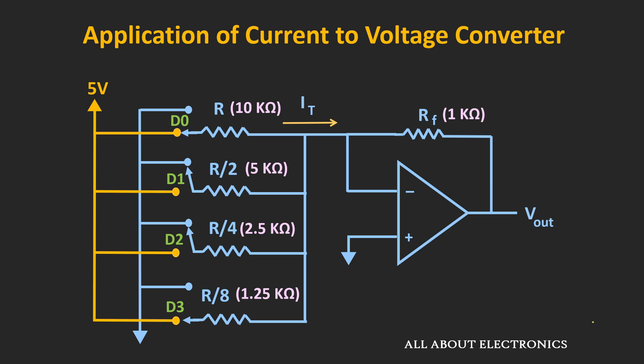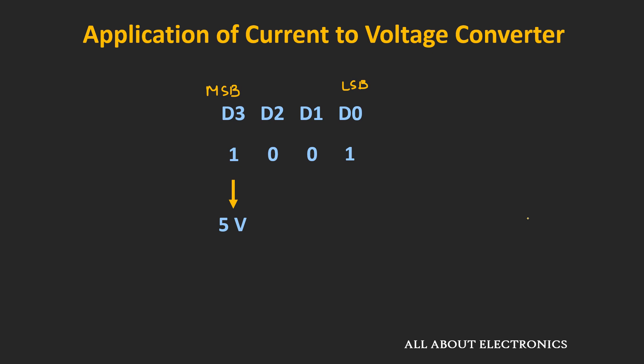Apart from these applications, this current-to-voltage converter is also used in digital-to-analog converters. Here we have a 4-bit digital-to-analog converter, and to this converter 4 bits of digital data have been applied. According to the applied digital bits, we get the analog output voltage at the output terminal. In this converter circuit, logical 1 is treated as 5V and logical 0 is treated as 0V. D3 is the most significant bit and D0 is the least significant bit. Let us say the bits 1001 are applied.